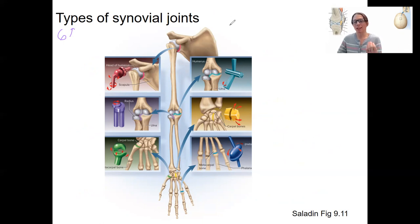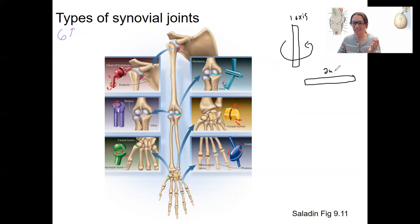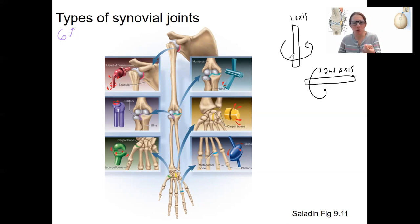If something can move relative to one axis, that's monoaxial — it can move in one direction. If that same joint also has a second axis, a different plane, that can be moved around as well. This is how we define joints. Let's see this in action.